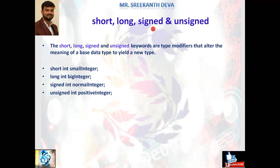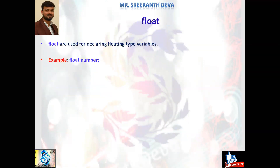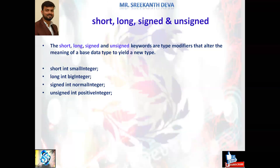short, long, signed, and unsigned are type modifiers that alter the meaning of a base data type to yield a new type: short for small integer, long for big integer, signed for normal integer, and unsigned for positive integers. All these keywords are used especially in data types like int, char, float, double, short, long, signed, and unsigned in C programming language.